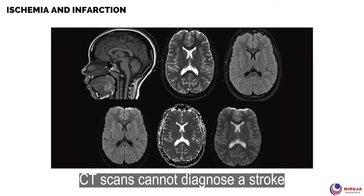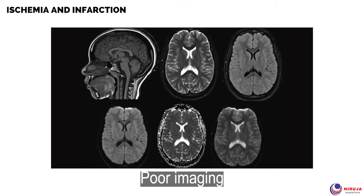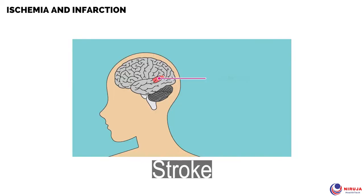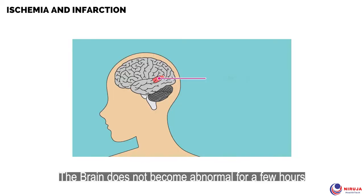Sometimes CT scans cannot diagnose a stroke because of poor imaging as compared to MRI, the stroke region being too small to be detected, or because the brain does not become abnormal for a few hours after the onset of stroke. Thus MRI is advised for clear imaging of the damaged region.